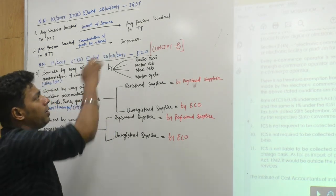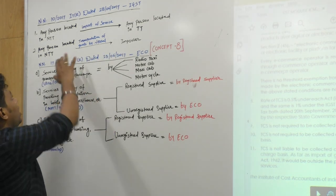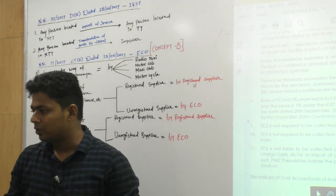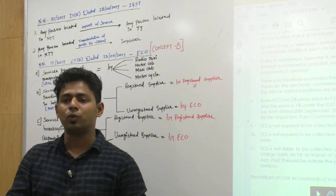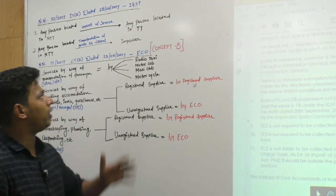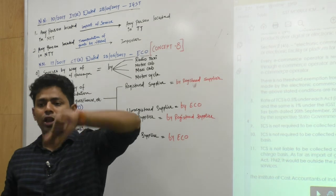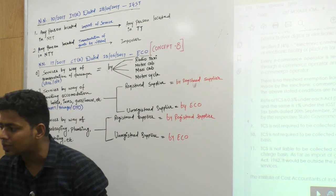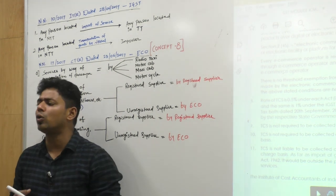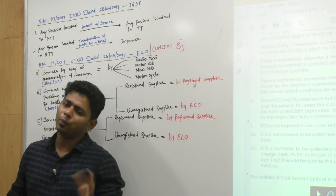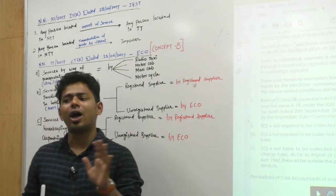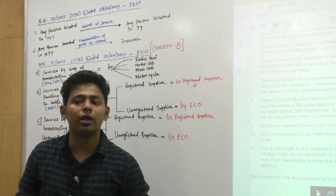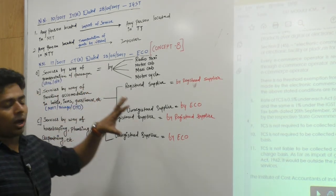The recipient must be located in taxable territory. Second, import of goods - when importing goods, we pay freight. Transportation of goods is a service provided by a transport company or vessel shipping business. Who will pay tax? The importer, because the importer is located here in India. So the importer will pay tax on RCM. The important entries were from CTR - those 14 items are very important.